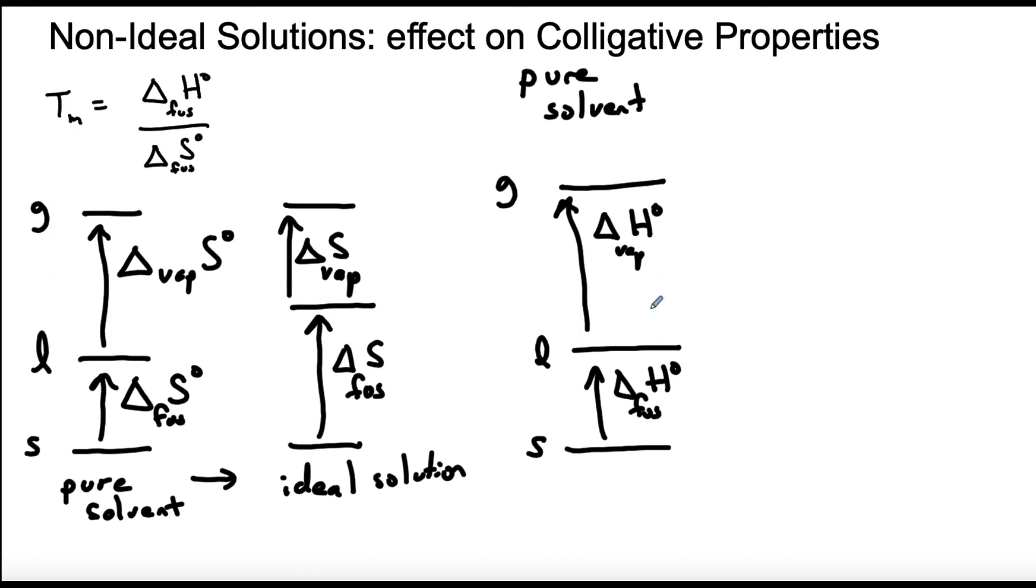So first let's just look at the enthalpy of pure substance. So if we go from solid to liquid we know that delta H for that is the heat of fusion, standard heat of fusion because we're talking about pure stuff. And if we go from liquid to gas that's the heat of vaporization. Now let's look at not doing this to a pure solvent but doing it to a non-ideal solution.